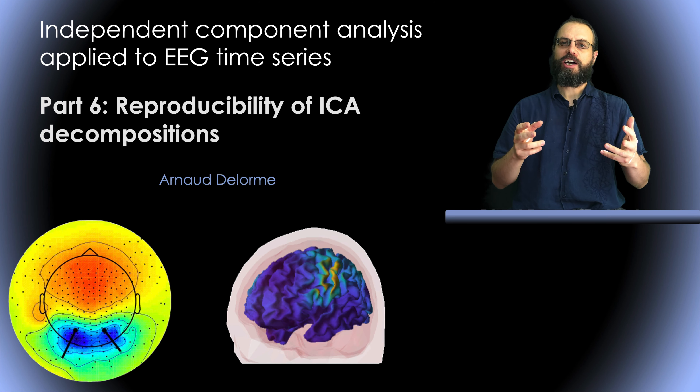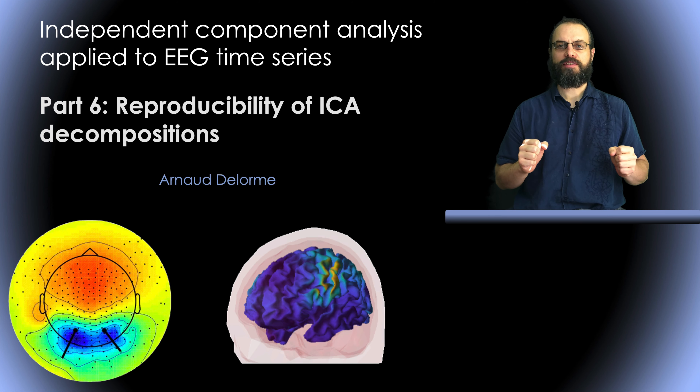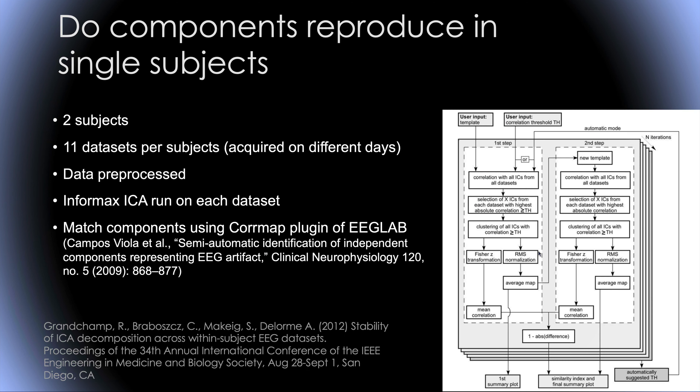If we run ICA several times on very similar data, is it going to give the same solution? To test that idea, we run ICA several times. We had two subjects and each subject came 11 times to the lab, so we have 11 sessions of about an hour of data for each subject. We wanted to know if we run ICA on the data from different days, do we get similar decomposition or different decomposition? How reproducible is it across days?